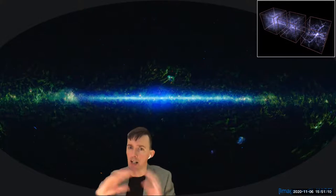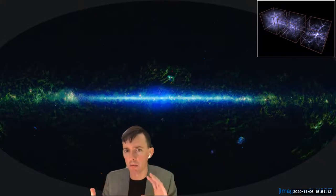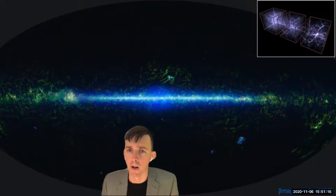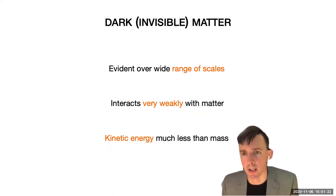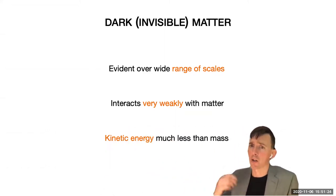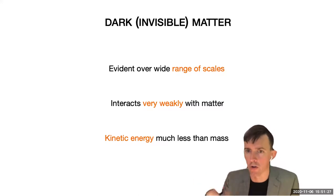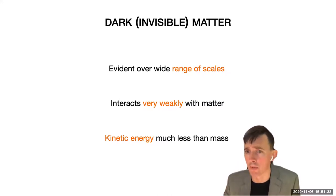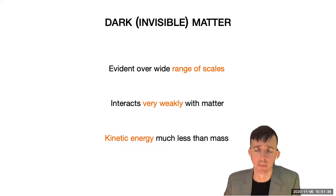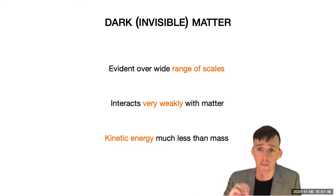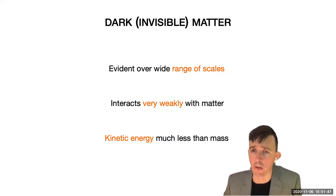In particular, each galaxy in the universe is surrounded by an invisible halo of this invisible unknown matter. This invisible matter is called dark matter, and evidence for it does not just come from cosmology or from the structure of the universe as a whole, but also from galaxies' behavior on their own and a number of different observations over several different scales.